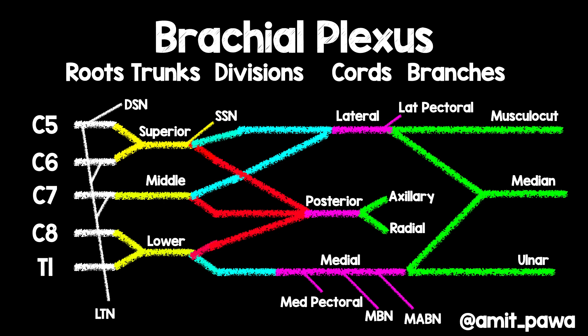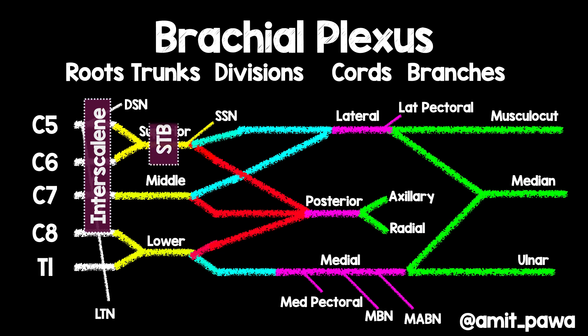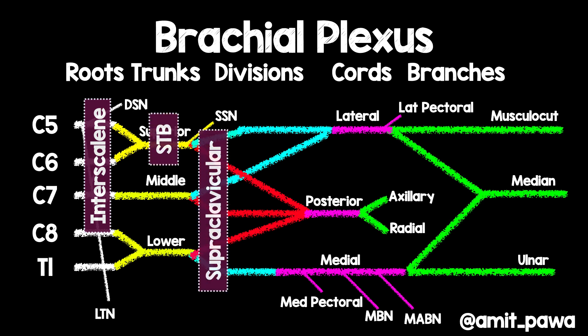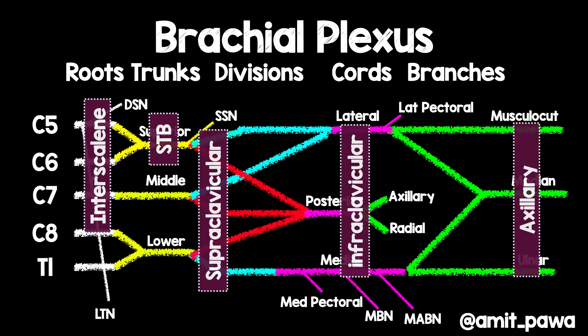Now let's superimpose on here where we would perform these relevant blocks. The interscalene is happening at root level, the superior trunk block at the superior trunk, the supraclavicular at the divisions, the infraclavicular at the cords, and the axillary brachial plexus block takes place at the branches. So now let's start by looking at the interscalene brachial plexus.